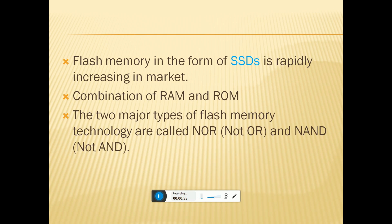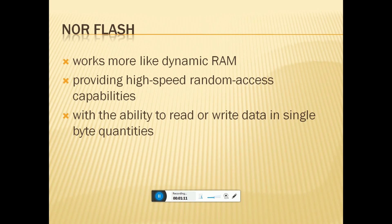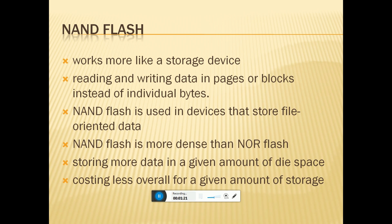Flash memory use in SSDs has rapidly increased in the market, combining RAM and storage. The two major types of flash memory technologies are called NOR and NAND. NOR flash works more like dynamic RAM, providing high-speed random access capability with the ability to read and write data. NAND flash works more like a storage device, reading and writing data in pages instead of individual bits.